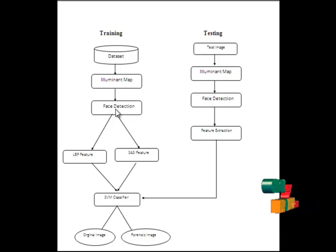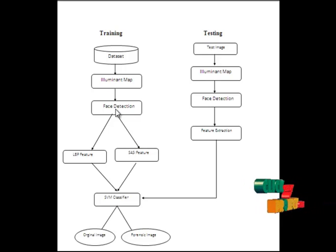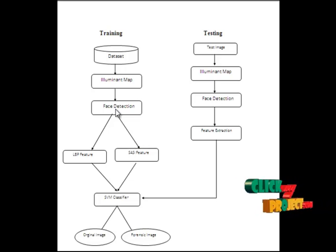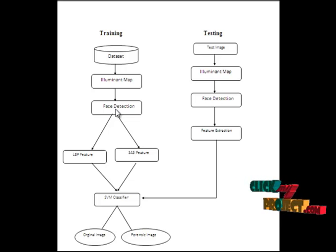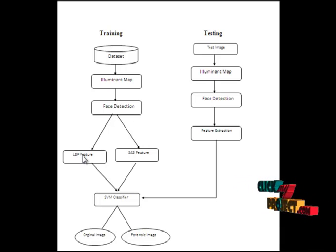For detecting the face, we use the Viola-Jones method. It identifies the face based on Haar features — it is a statistical model of the shape of an object which is iteratively deformed to fit examples of the object in a new image. After identifying the face, it passes to feature extraction.